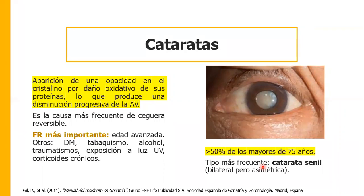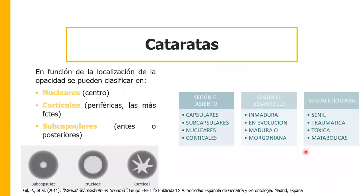El tipo más frecuente es la catarata senil, que es bilateral pero asimétrica. Según su localización pueden ser nucleares si están en el centro, corticales si están en la corteza —las más comunes y periféricas—, y subcapsulares anteriores o posteriores. Según el desarrollo: inmadura, en evolución, madura o morganiana, que es la que ya está blanca completamente, también llamada postmadura. Según la etiología: senil, traumática, tóxica o metabólica como la diabetes mellitus.